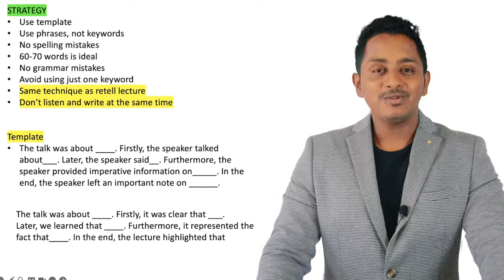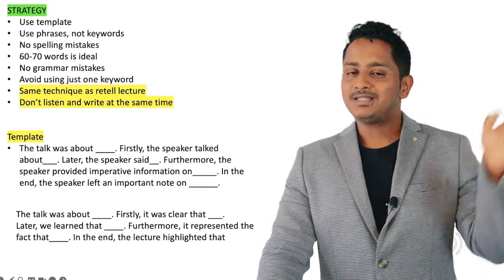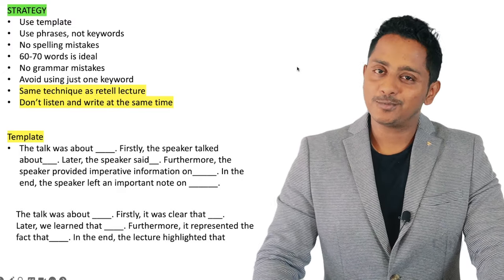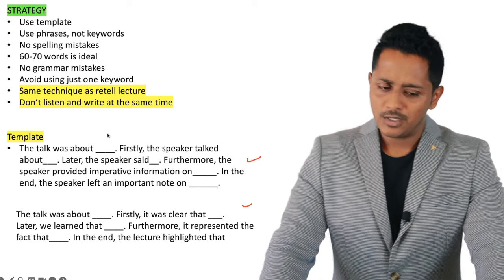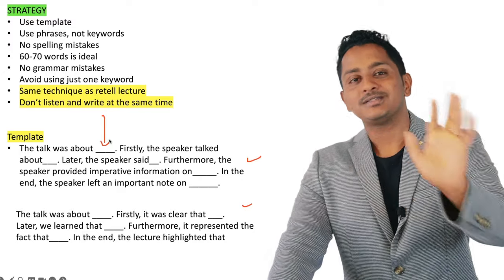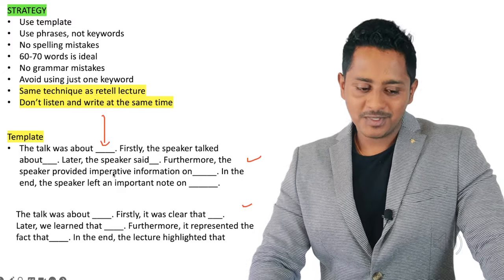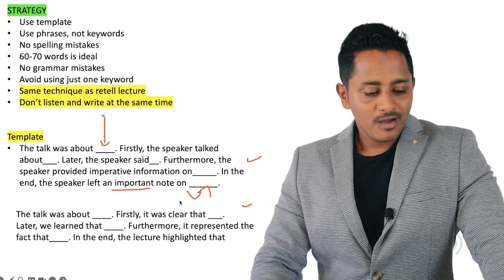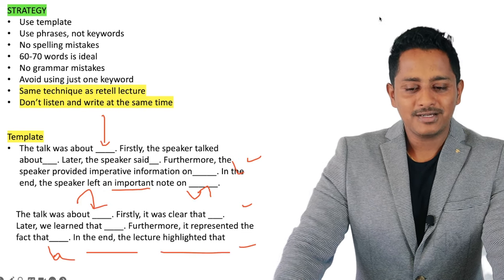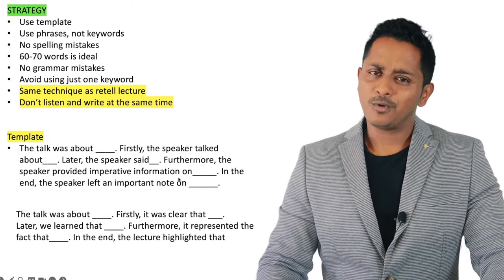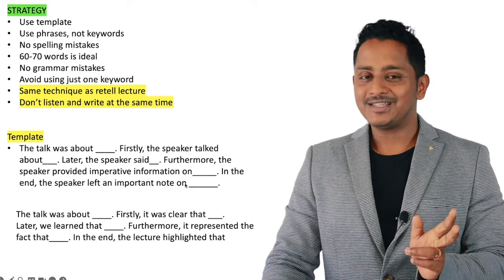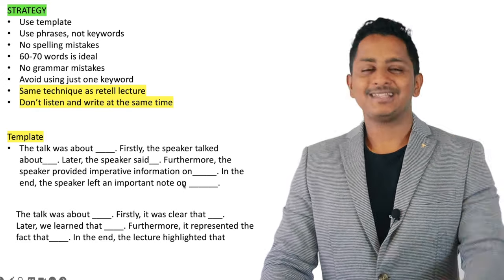Use a template — here are two options. First: 'The talk was about [topic]. Firstly, the speaker talked about... Later the speaker said... Furthermore, the speaker provided imperative information on... In the end, the speaker left an important note on...' Second: 'The talk was about... Firstly it was clear that... Later we learn that... Furthermore it represents the fact that... In the end the lecture highlighted that...' Any template is fine — it covers 25 to 30 words, so you need about 40 more from your notes.